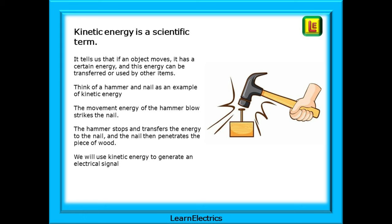As a very basic example, think of a hammer and a nail and what happens when the kinetic energy is transferred between them. There is the movement energy of the hammer blow as it strikes the nail. The hammer stops and transfers the energy to the nail, and the nail then moves and penetrates the piece of wood.